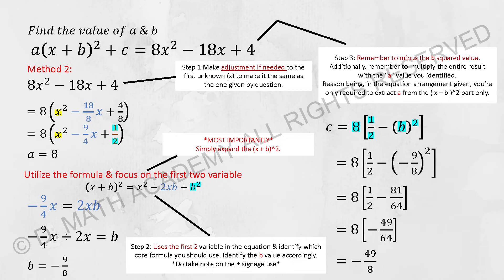Whereby for the next one, you will know that 2xb equals to your -9/4x, so you run the calculation, you will get your b as -9/8.